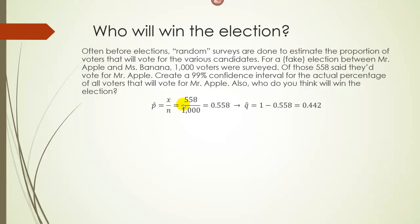To find our sample proportion, we take the number of people that said they'd vote for Mr. Apple over our sample size. So 558 over 1,000, which is 0.558 or 55.8%. Your interpretation would be: 55.8% of our sample said they would vote for Mr. Apple. Q hat, you might remember from the binomial distribution, Q is just 1 minus P. So Q hat is 1 minus 0.558, which is 0.442 or 44.2%.